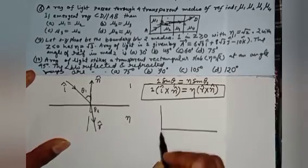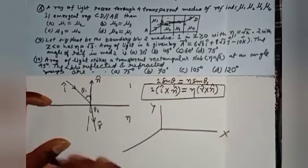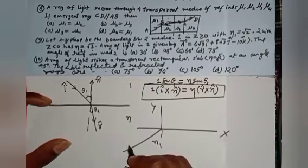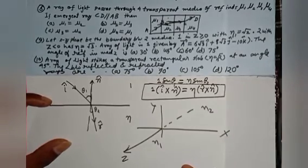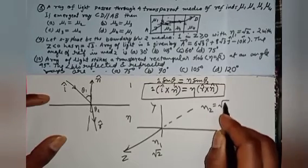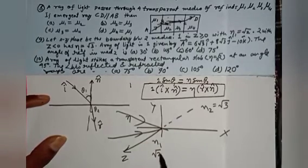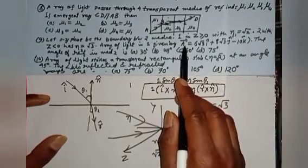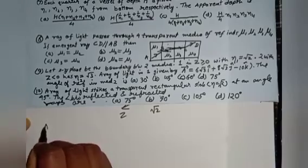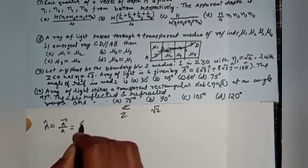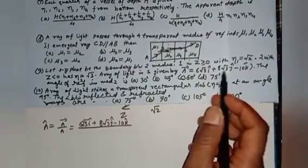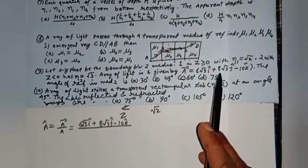Here the xy-plane is the boundary between two media. On one side, eta1 = root 2, and on the other side, eta2 = root 3. The incident ray vector is given as 6√3 i-cap + 8√3 j-cap − 10 k-cap. To find the unit vector, we divide by its magnitude. The magnitude is the square root of (6√3)² + (8√3)² + (10)², which works out to 20.